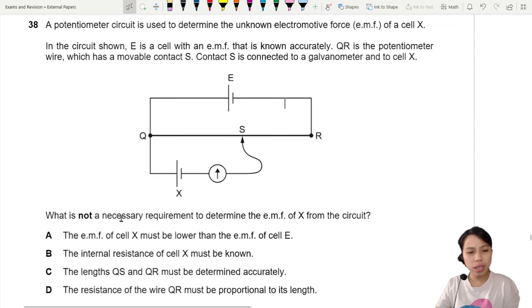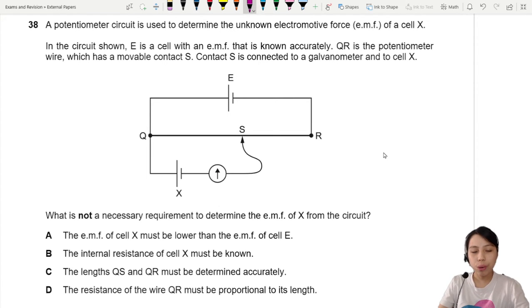What is not a necessary requirement to determine the EMF of X from the circuit? So usually when you see this kind of potentiometer system, if you want to find wire X, you will adjust this jockey, this needle, put it at some position until the potential difference across this cell is same as the potential difference across this cell.